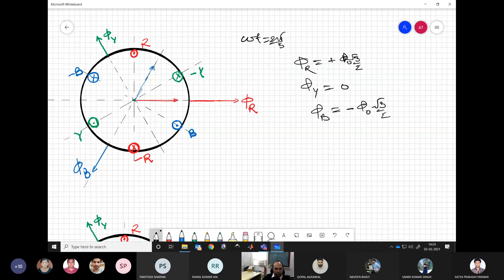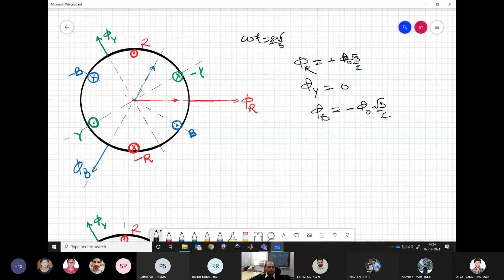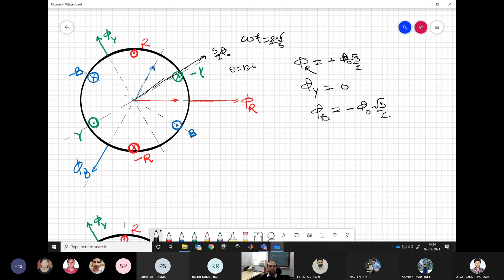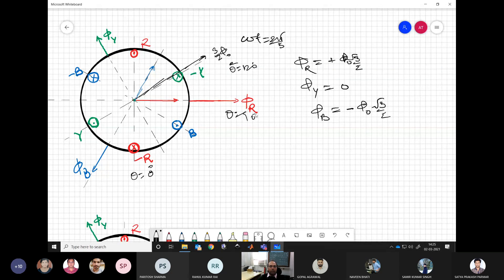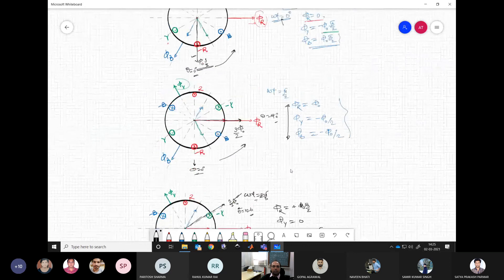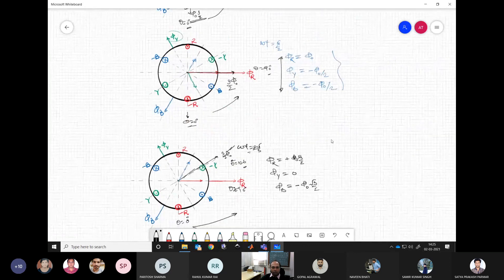So our net flux will come along this, 3 by 2 times phi naught. So again, at theta equal to 120 degrees it is here. So from here it started at 0 degrees, and then at theta equal to 90 degrees here, and then at theta equal to 120 degrees it is here. So this is what we see as the rotating flux or rotating MMF, or any quantity which you want to correlate with this. So this has this tendency, which is what I wanted to showcase in the morning.